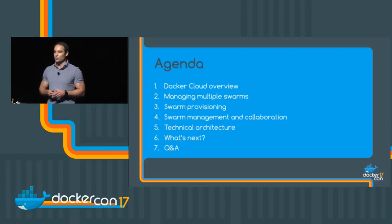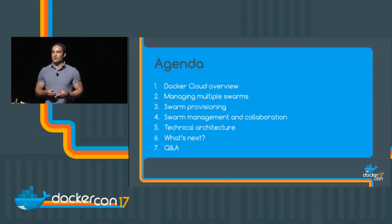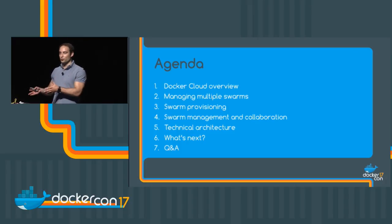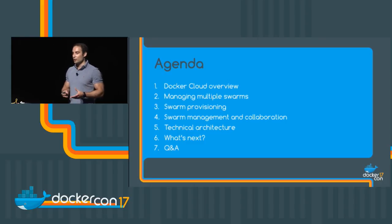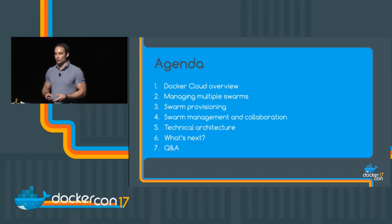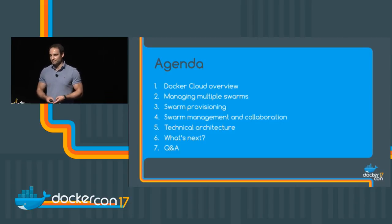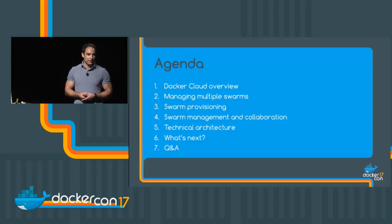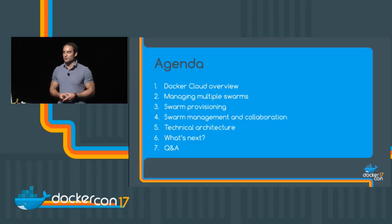First, we are going to have a look at what Docker Cloud is. Then we are going to be touching on the challenges that a typical developer faces when trying to move from local development to a remote swarm. Then we'll look at how Docker Cloud can help you in three areas: provisioning, management, and collaboration. After that, we'll look at the technical architecture, and then we'll cover the roadmap for fleet management and Docker Cloud, with time for Q&A.